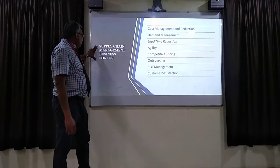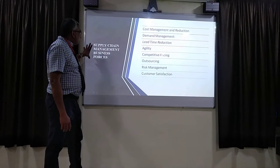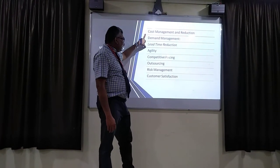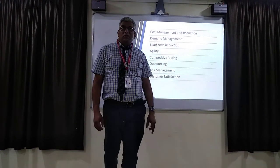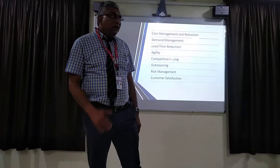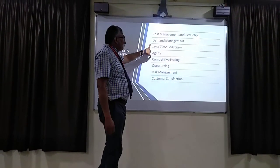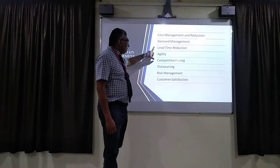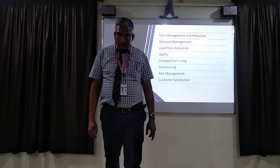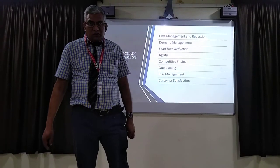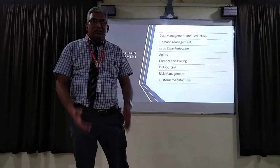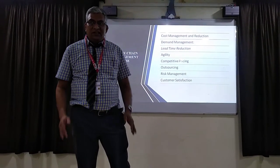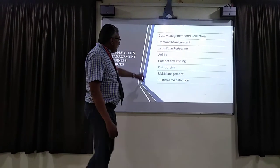In terms of business process, one important aspect of supply chain management is cost management and reduction — you have to reduce cost to a minimum level. Another is demand management — how demand for your product will be established with the customer. Another is lead time reduction — how we can deliver material to the customer in the shortest time. Lead time is the time taken from order to delivery of the product, and it has to be minimized.